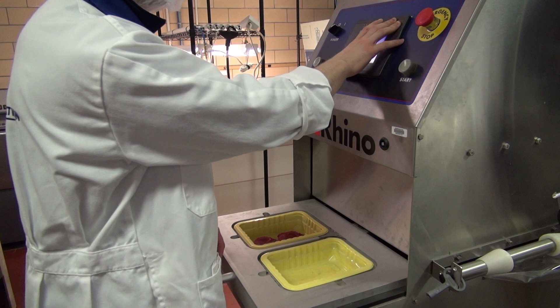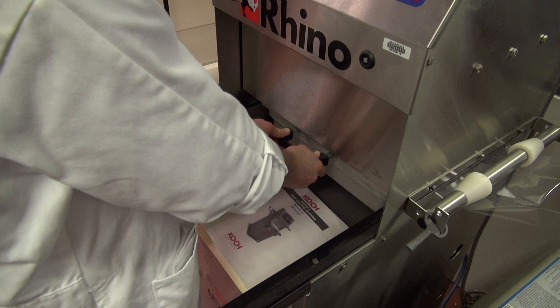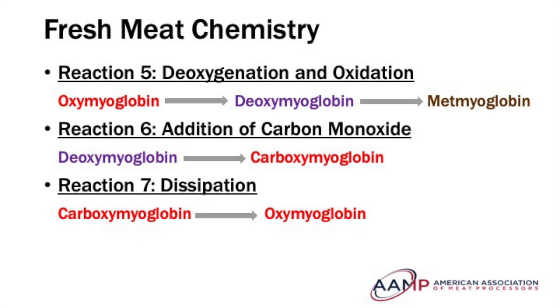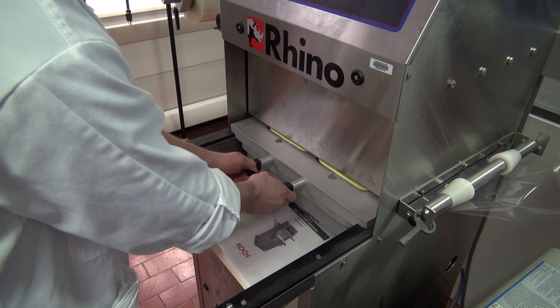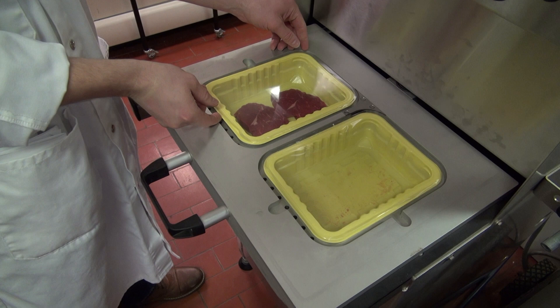The last reaction, reaction number seven, is called dissipation — the conversion of carboxymyoglobin to oxymyoglobin. Over time, carbon monoxide will dissociate from myoglobin and be replaced with oxygen, forming oxymyoglobin. Then the oxymyoglobin will follow the same pathways as reactions two and three to deoxymyoglobin and metmyoglobin respectively.